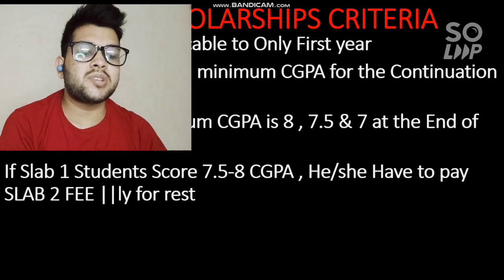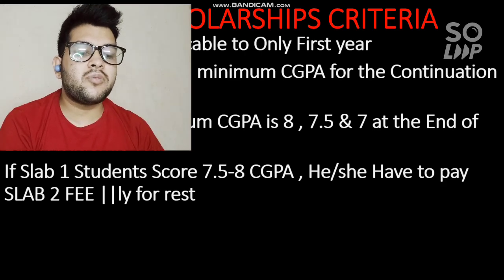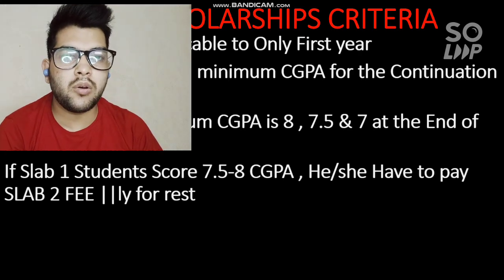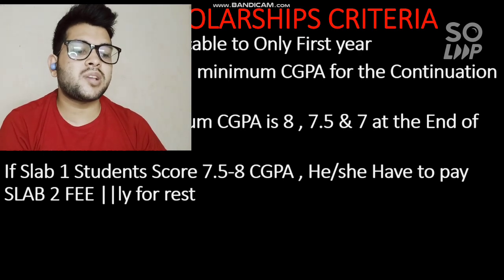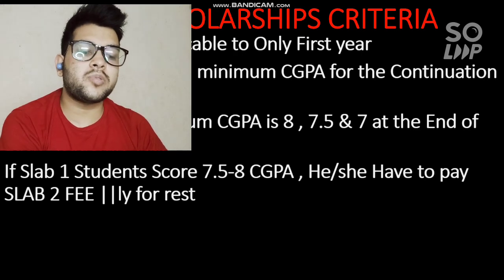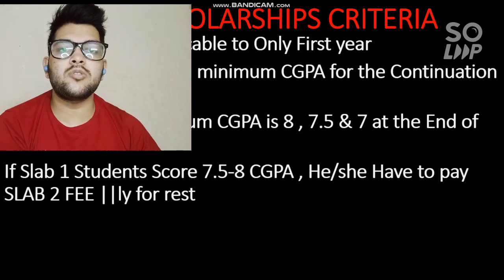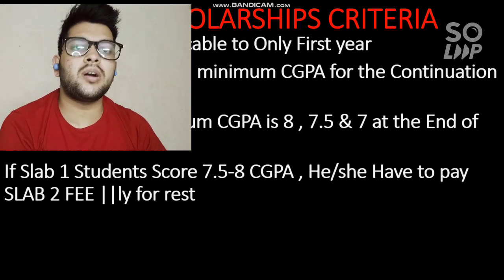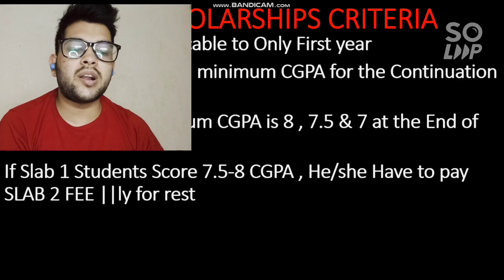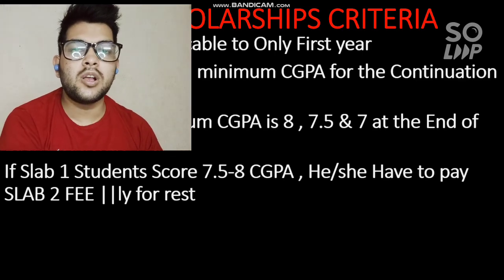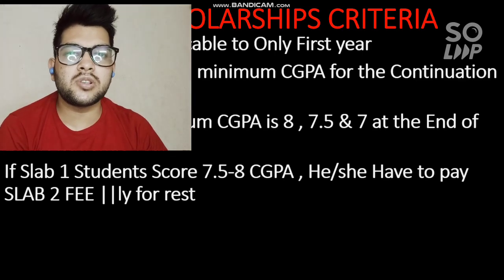Similarly, for Slab 2: if you currently have Slab 2 and score less than 7.5 CGPA, you have to pay the Slab 3 fee. And if you are in Slab 3 and score less than 7 CGPA, you have to pay the regular fee. Your scholarship is degraded — you cannot upgrade it by scoring higher in the next year.